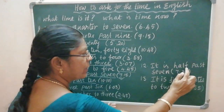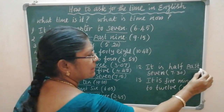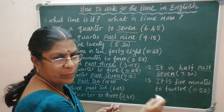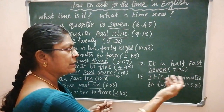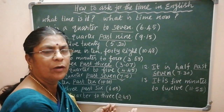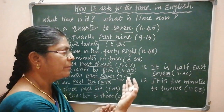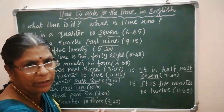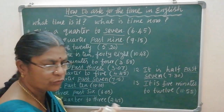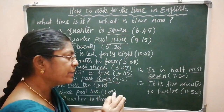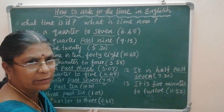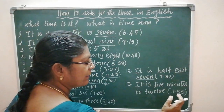It is half past seven. Seven is past, then how many minutes more? The half. Half means 30 minutes, quarter means 15 minutes. So it is half past seven — the time is 7:30. This is the correct way to say the time. It is five minutes to twelve — you are not reaching twelve, just five minutes more to reach twelve. So it is five minutes to twelve — that means the time is 11:55.